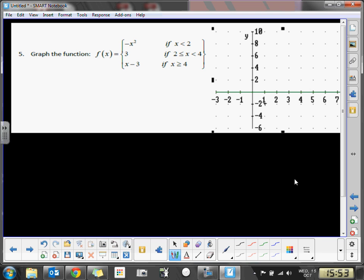So the first thing I'm going to do is graph the interval that's to the left of 2. When we look at the graph of negative x squared, so if I do y equals negative x squared, I know I've got a parabola that is frowning where the vertex is on the origin.